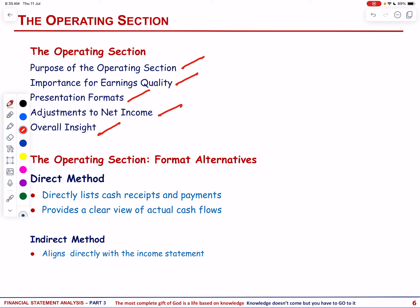The cash flow statement under US GAAP and IFRS offers two methods to present cash flows from operations: the direct method and the indirect method. The direct method directly lists cash receipts and payments categorized by sources like cash from customers and cash paid to suppliers. Its advantage is that it provides a clear, intuitive view of actual cash flows related to operating activities. However, it requires a separate reconciliation schedule to convert from net income to cash flows, which adds complexity.